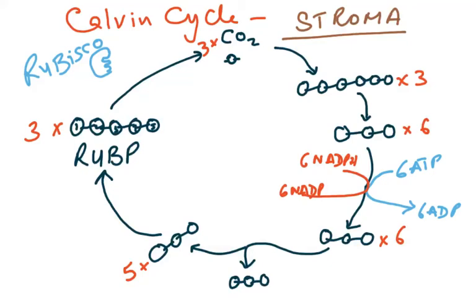This is the second video on the process of photosynthesis, and we're going to discuss the Calvin cycle, which is the light-independent reaction. If you have studied the first video on the light-dependent reaction, you can understand why we need nine ATP molecules and six NADPH molecules here.